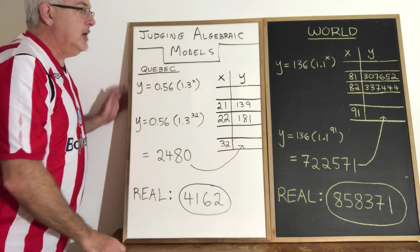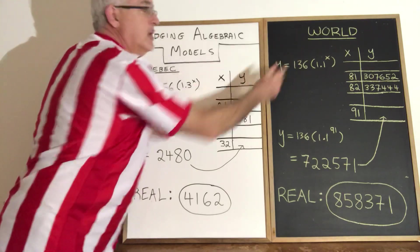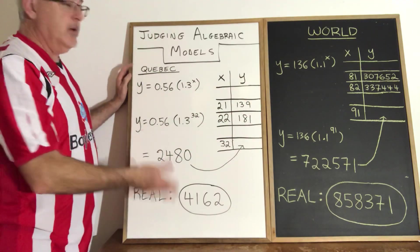In this example we're looking at the spread of coronavirus in Quebec and in the world. So we actually have two models, both of which are exponential.